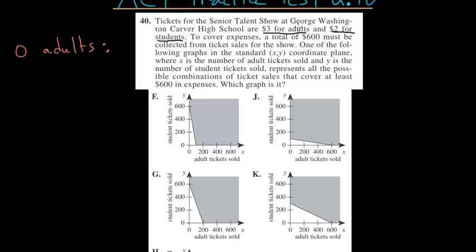$600 must be spent. If you divide $600 by $2, you end up with 300 tickets. So, when zero adults buy tickets, 300 students will buy tickets so that the expenses are met. That's one of the extremes.